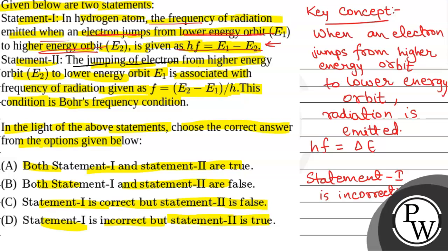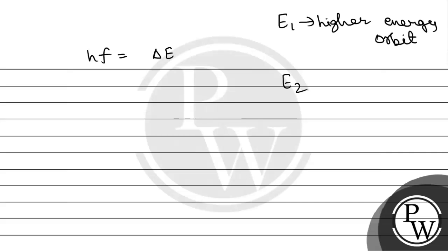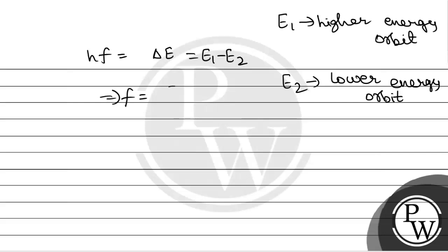Now, in the second statement, the jumping of electron from higher energy orbit is associated with frequency of radiation given as F is equal to E2 minus E1 by H. This is the correct statement, because we have the formula Hf equal to delta E, that is difference in energy level. We have E2 as the higher energy orbit and E1 as the lower energy orbit, so the difference in energy delta E equals E2 minus E1, and the frequency of radiation emitted equals E2 minus E1 by H.